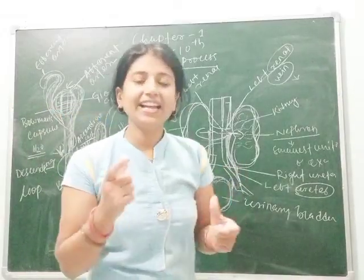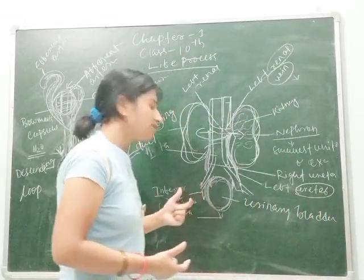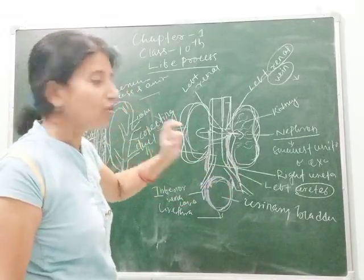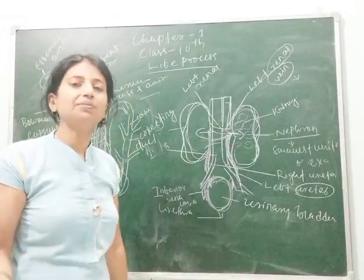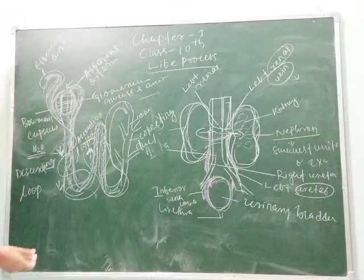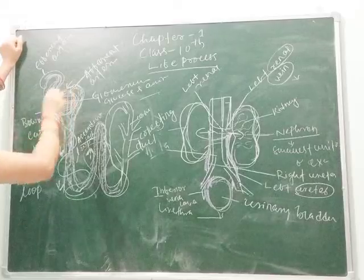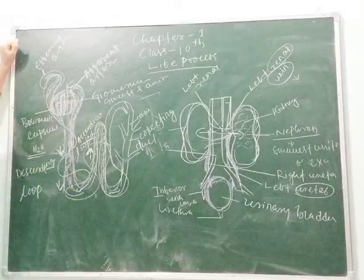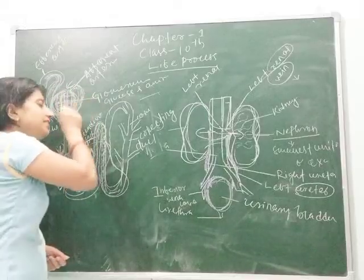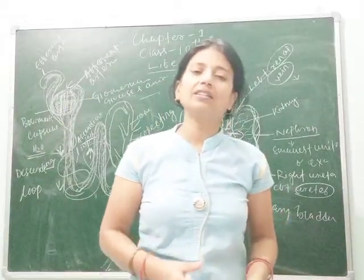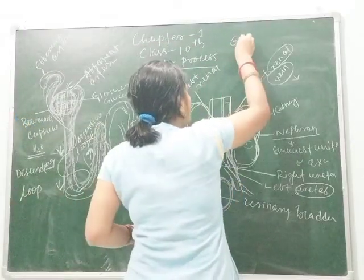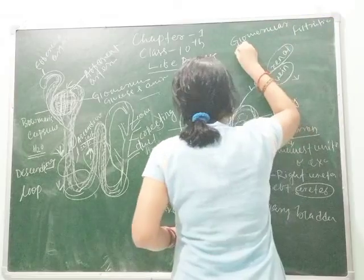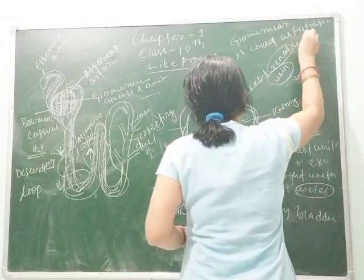Essential substances are reabsorbed by the tubules of the nephron, and the remaining unfiltered substance travels through the ureter to the urinary bladder, where it is stored until pressure builds up. The urinary bladder is a muscular structure under direct control of the central nervous system, which is why we can voluntarily control and delay urination. The glomerulus is the main filtration area, filtering glucose and other small molecules through its microscopic holes.